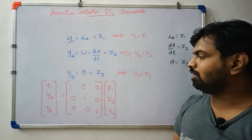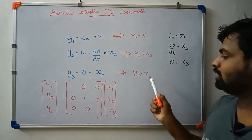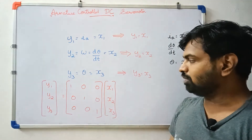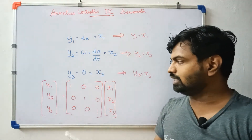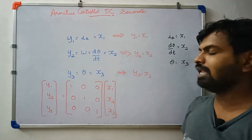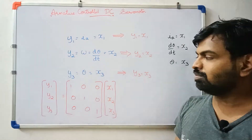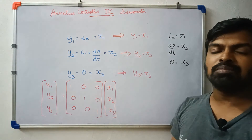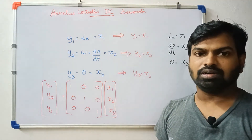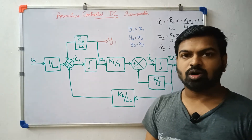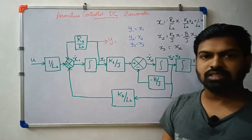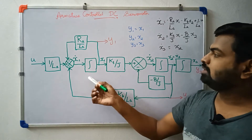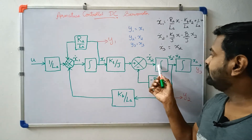So the output equation has elements: the first row is 1, 0, 0 for y1 equals x1; the second row gives y2 equals x2; and the third row gives y3 equals x3. Now we have the complete state and output equation. The block diagram has 3 integrators corresponding to x1, x2, and x3.